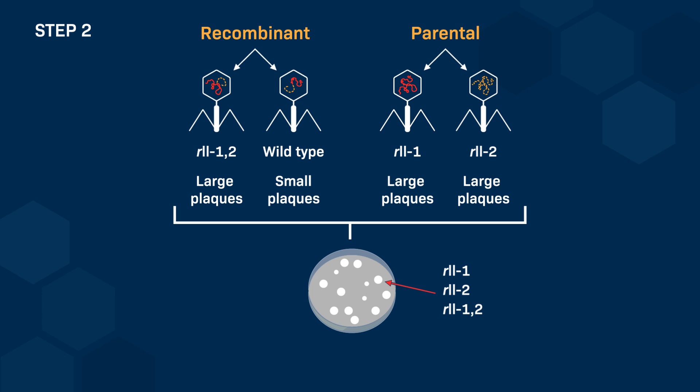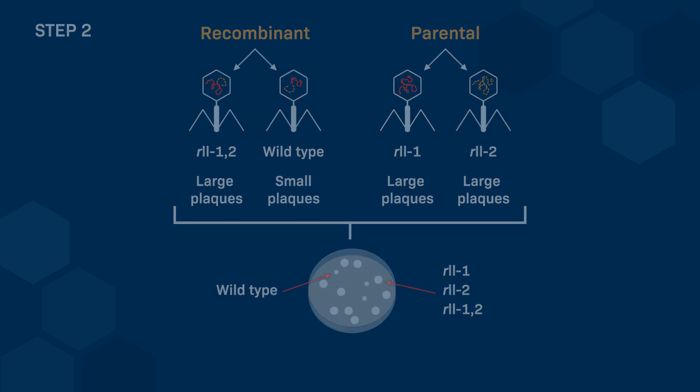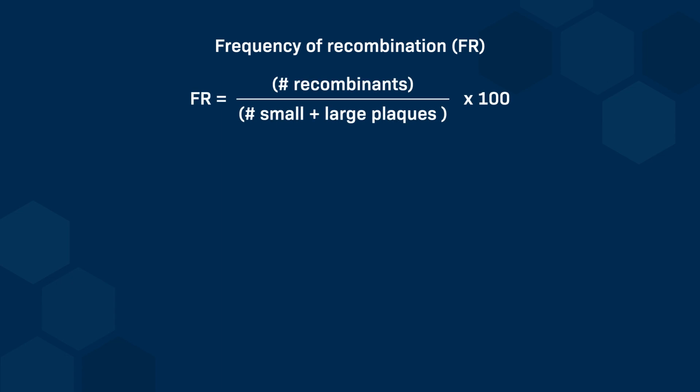The wild-type bacteriophages produce small plaques. From here, we can calculate the frequency of recombination. The frequency of recombination is the total number of recombinants divided by the total number of progeny, multiplied by 100 to express it as a percentage. Counting the total number of plaques is simple — it's the number of small plaques plus the number of large plaques. However, determining the number of recombinants is more complicated. The number of wild-types is easy to determine because we just count the small plaques. However, determining the number of double mutants is impossible because double and single mutants produce indistinguishable large plaques.